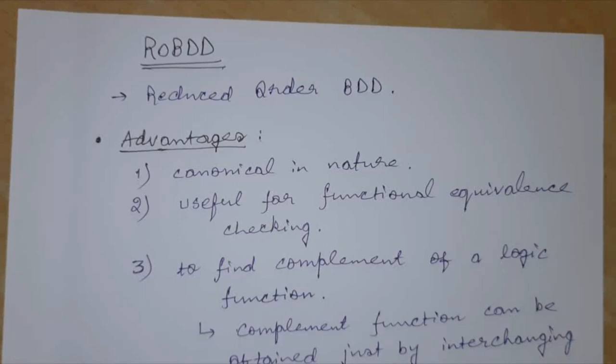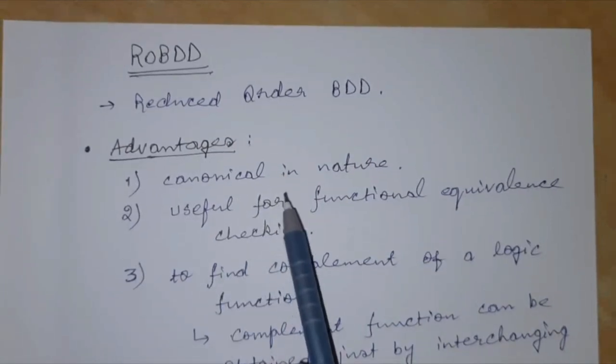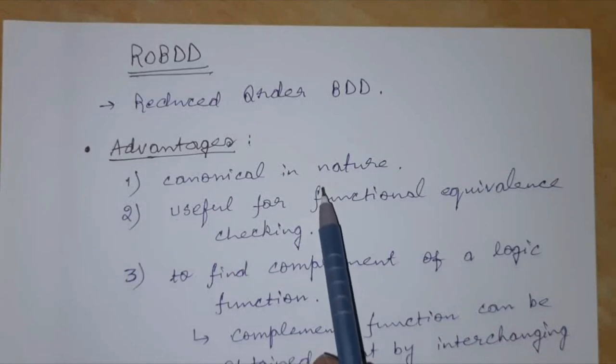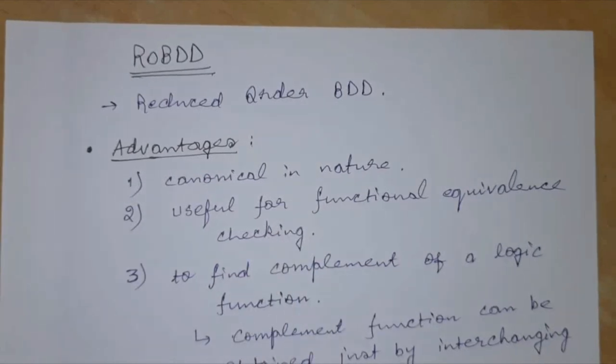So what are its advantages? As you can see, I have noted them down. The ROBDD is canonical in nature. That is, we will have a unique ROBDD for the given function, and there will be exactly one ROBDD for a given variable ordering. If you change the variable order, then you will obtain another ROBDD which will be just as unique as the previous one.